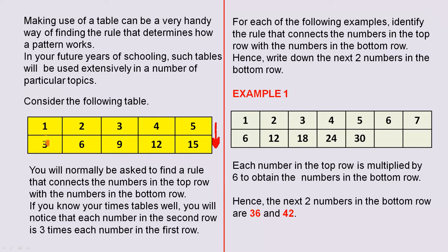3 1s are 3, 3 2s are 6, 3 3s are 9, 3 4s are 12 and 3 5s are 15. That's very easy to see. For each of the following examples, identify the rule that connects the numbers in the top row with the numbers in the bottom row. Hence, write down the next two numbers in the bottom row.